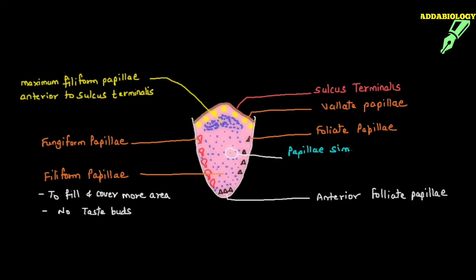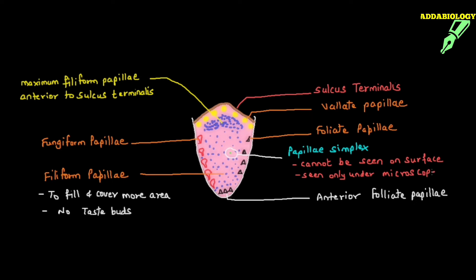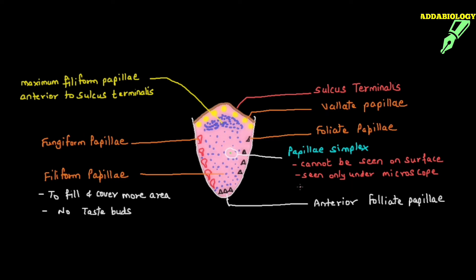The last type is papillae simplex. These cannot be seen with the naked eye — they can only be seen under a microscope. This is because papillae simplex do not project above the tongue surface. These are the five different types of papillae with their respective nerve innervations.